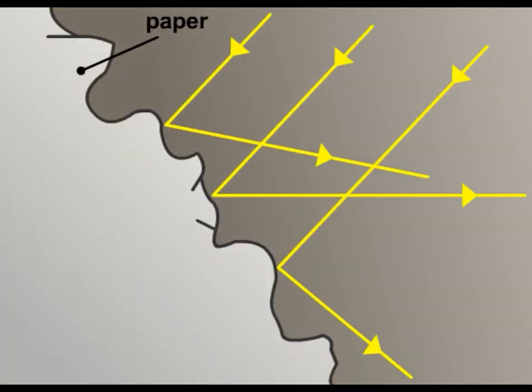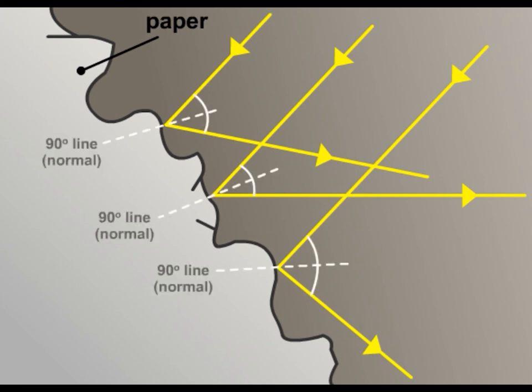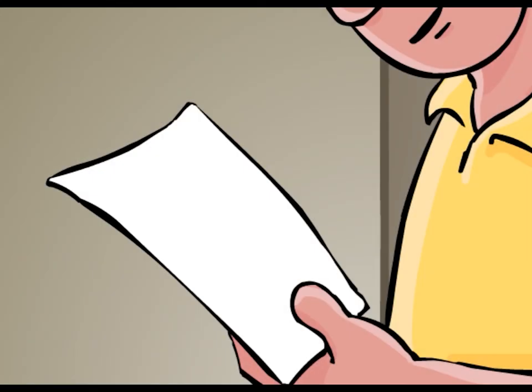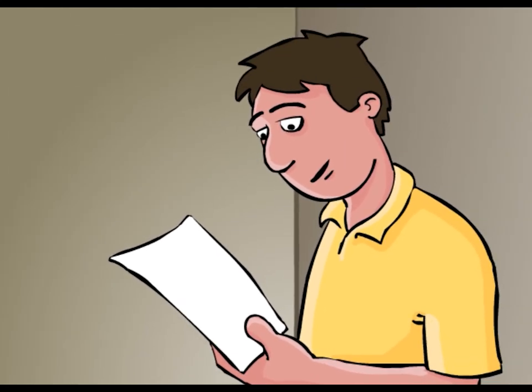Paper has a rough surface. When light from an object falls on a sheet of paper, the light will bounce off at different angles. Therefore, we cannot see any image.